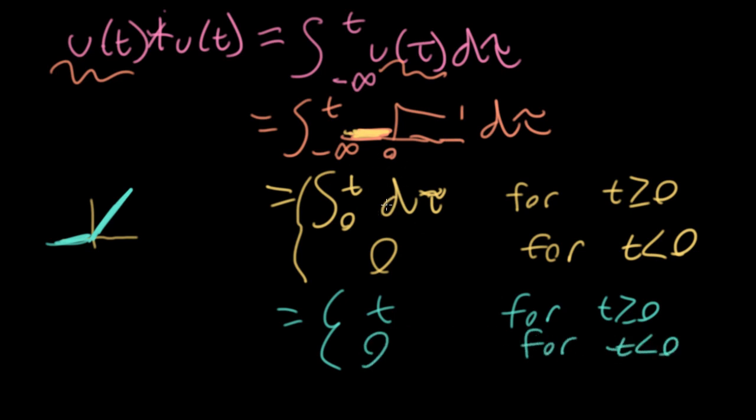And that comes from, if I do the indefinite integral here, let me do that over to the side, integral from zero to t of d tau. Well, what does this look like? It looks like I'm going to have a tau here, and I'm evaluating it between tau equals zero and tau equal to t. So that's how I plug in the t.